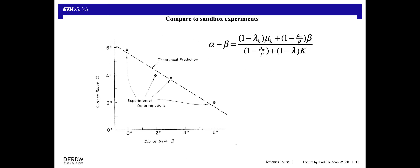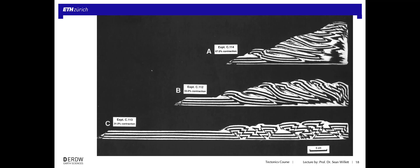The critical wedge equation says that the taper angle alpha plus beta is some function of all these physical properties. One of the simplest things we can do is go back to these sandbox experiments and ask whether it predicts the answer. The sandbox found a linear relationship between the surface slope and the basal slope — and that's exactly what this equation is: an equation of a line. The slope of that line is a function of the coefficients of friction. A larger coefficient of friction on the base means a larger taper angle.